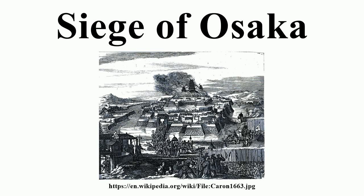In the end, however, Hideyori's commander Sanada Yukimura was killed, destroying the morale of the western army. The smaller force led directly by Hideyori sallied forth from Osaka Castle too late, and was chased right back into the castle by the advancing enemies. There was no time to set up a proper defense of the castle, and it was soon ablaze and pummeled by artillery fire. Hideyori committed seppuku, and the final major uprising against Tokugawa rule was put to an end, leaving the shogunate unchallenged for approximately 250 years.